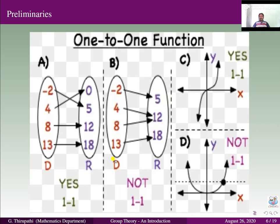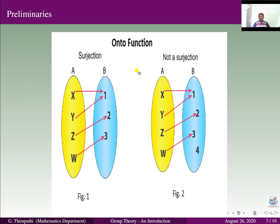Now, one-to-one function. Take domain A as {-2, 4, 8, 13} and co-domain B as {0, 5, 12, 18} — this is a function. Not only a function, it is a one-to-one function, every element having a unique image: -2 maps to 5, 4 maps to 0, and so on. The range is a subset of the co-domain. Then, onto function, or surjection — every element of B has a pre-image. This is an example for an onto function.